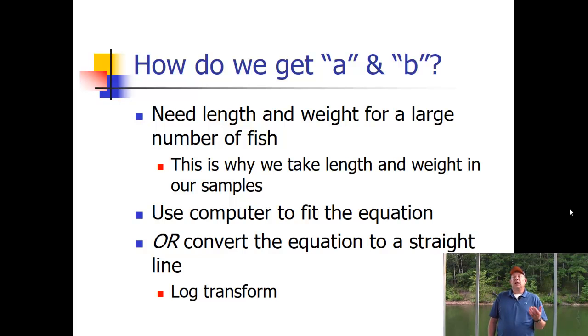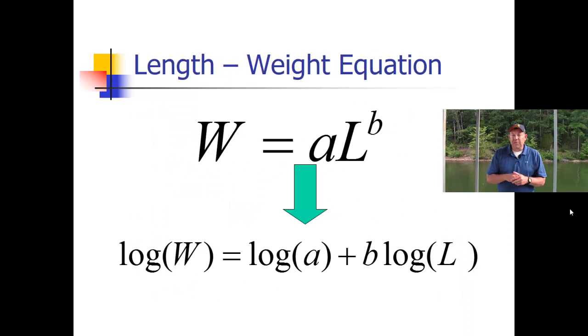The way we can do it by hand is we convert the equation to a straight line and then solve for that straight line. Remember, getting an equation for a straight line is very simple. The way we're going to get that straight line is to log transform things. Anytime we're working with curvilinear data, we can log transform it and that will tend to make a straight line. Straight lines are easier to work with than curved lines. The actual relationship is logarithmic, so the actual data will tend to be curved. We just transform it to make it easier to work with.